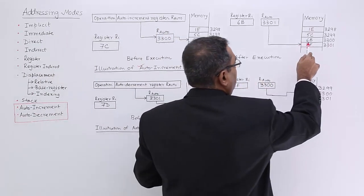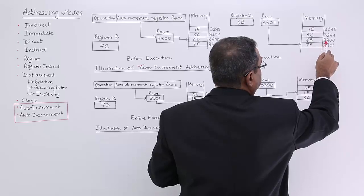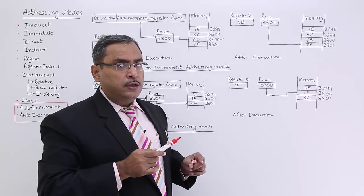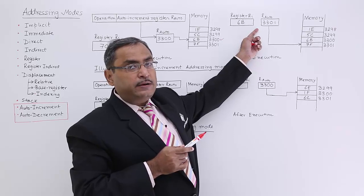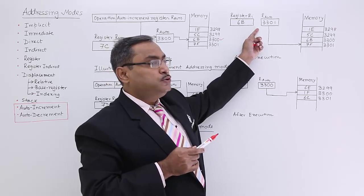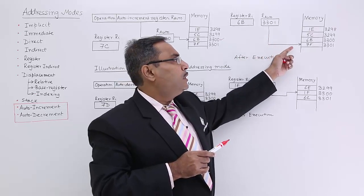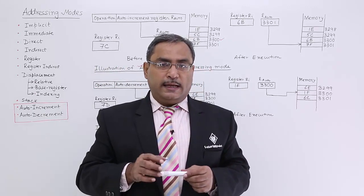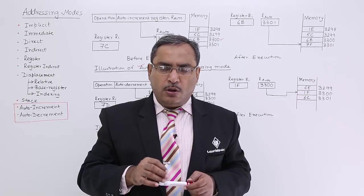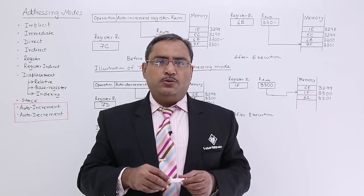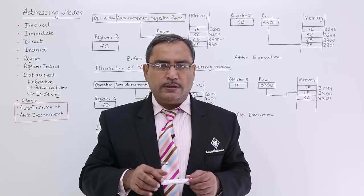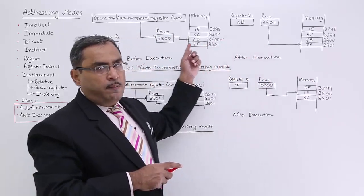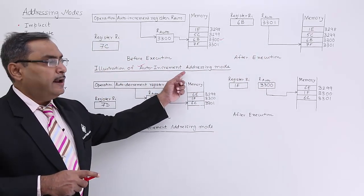After execution, the value at memory address 3300 will be read and kept in register RI. And automatically, the auto increment register's content will be increased from 3300 to 3301, so it will now be pointing to that next location. This is known as auto increment — there is no need to execute any separate add or increment micro instruction to increase the address content in the R auto register. This is the instance after execution.